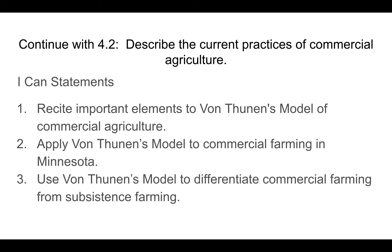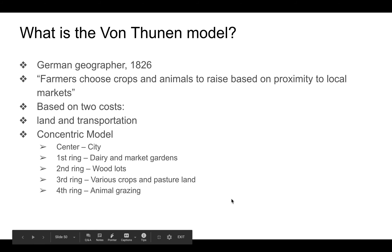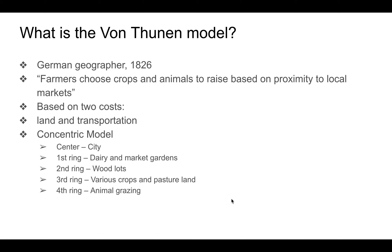Von Thünen was a German geographer in 1826, and keep in mind he was a farmer during the time when the Industrial Revolution had taken a stronghold. We see people move into urban areas and fewer people in rural areas, giving birth to commercial agriculture based on the evolution of the Industrial Revolution. With this, farmers chose crops and animals to raise based on local markets.